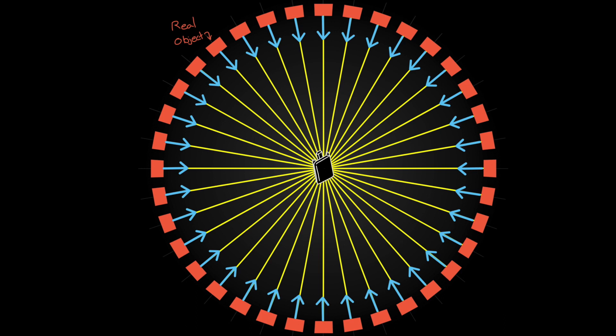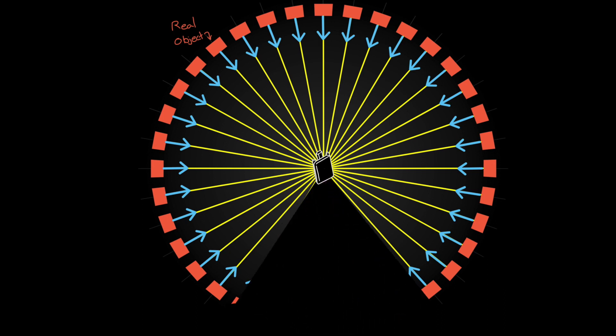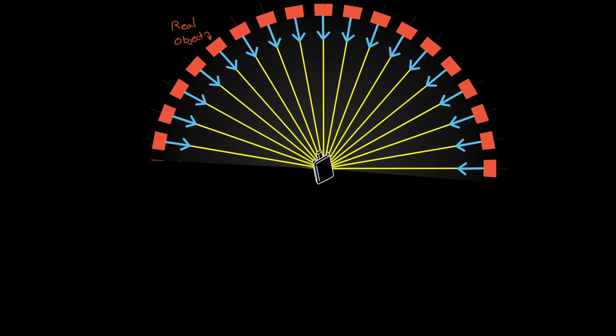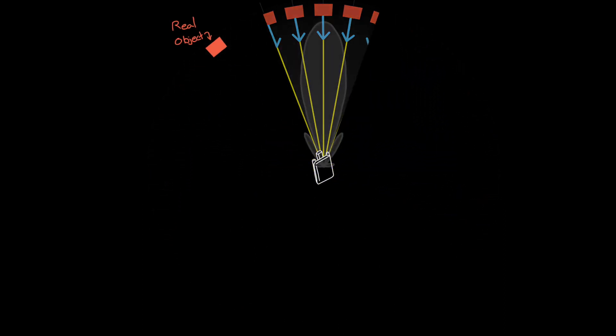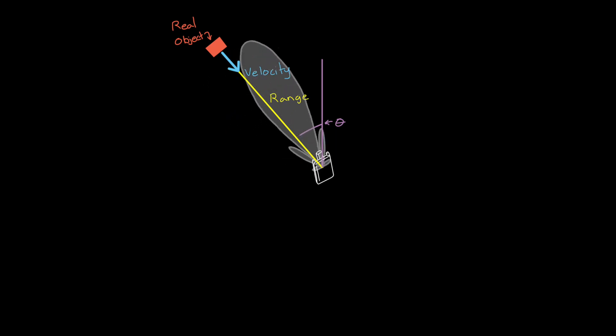So knowing just range and velocity is of limited use for tracking and understanding where the object actually is. To reduce the region where the object could be, we need to change the antenna. Instead of transmitting with an isotropic antenna, we can use an antenna that forms a more narrow beam. If the radar doesn't sense a detection, then we know that there isn't an object in the direction of the beam. And we could scan through the environment and note the direction the beam is facing when a detection is made. In this way, we can know the direction to the object to within the width of the beam.